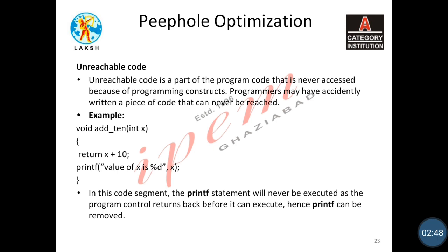The second technique is unreachable code. Unreachable code is a part of program code that is never accessed because of a programming construct — a programmer may have accidentally written a piece of code that can never be reached. For example, in void add with return x plus 10, any printf statement written after the return statement will never be executed as the program control returns before it can execute. Hence the printf statement is unreachable code and can be removed.